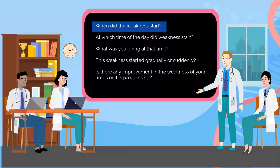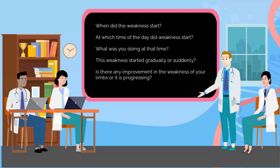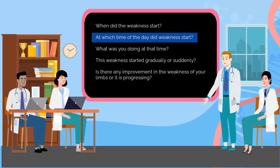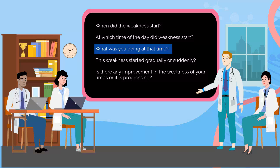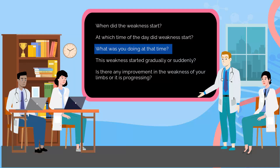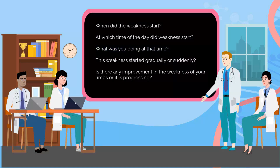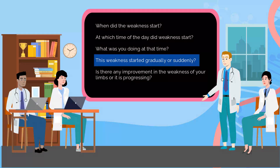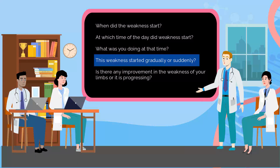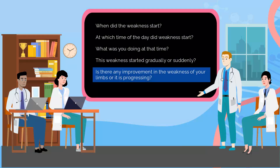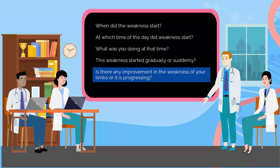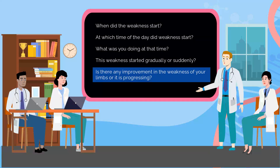When did the weakness start? At which time of the day did the weakness start? What were you doing at that time? Did this weakness start gradually or suddenly? Is there any improvement in the weakness of your limbs, or is it progressing?